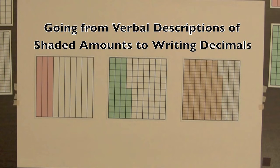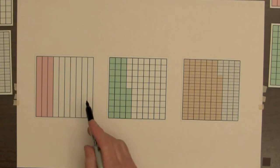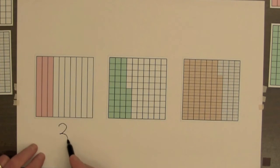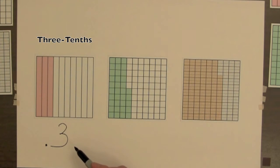After students are familiar with describing shaded amounts with whole numbers, we can bring in decimals. The decimal for 3 parts out of 10 is 0.3, and the name of this decimal is 3 tenths.